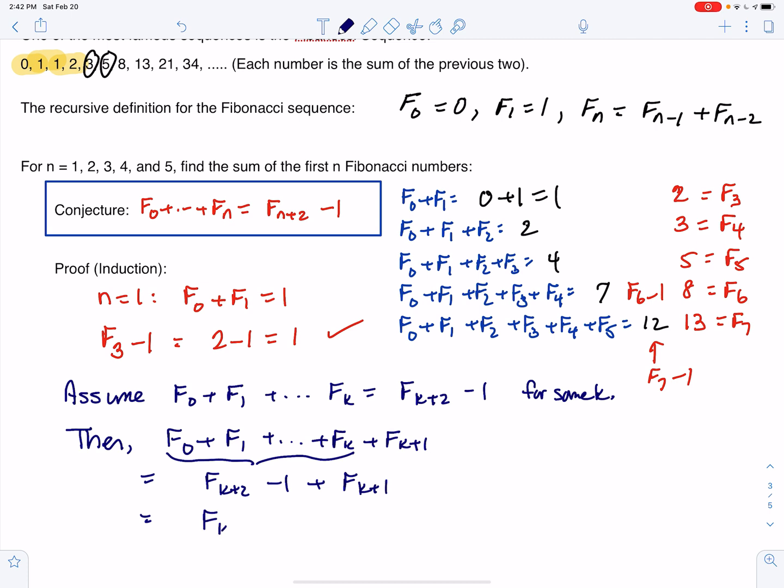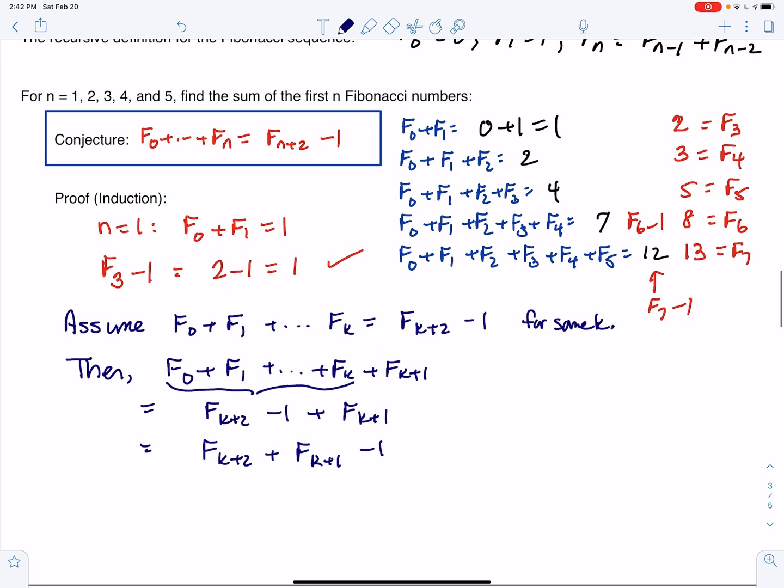By the inductive hypothesis, I know that this is F sub k plus 2 minus 1. And I'm just going to rewrite this so that the Fibonacci numbers are together. But now remember, the sum of two consecutive Fibonacci numbers is the next Fibonacci number. So this is F sub k plus 3 minus 1.